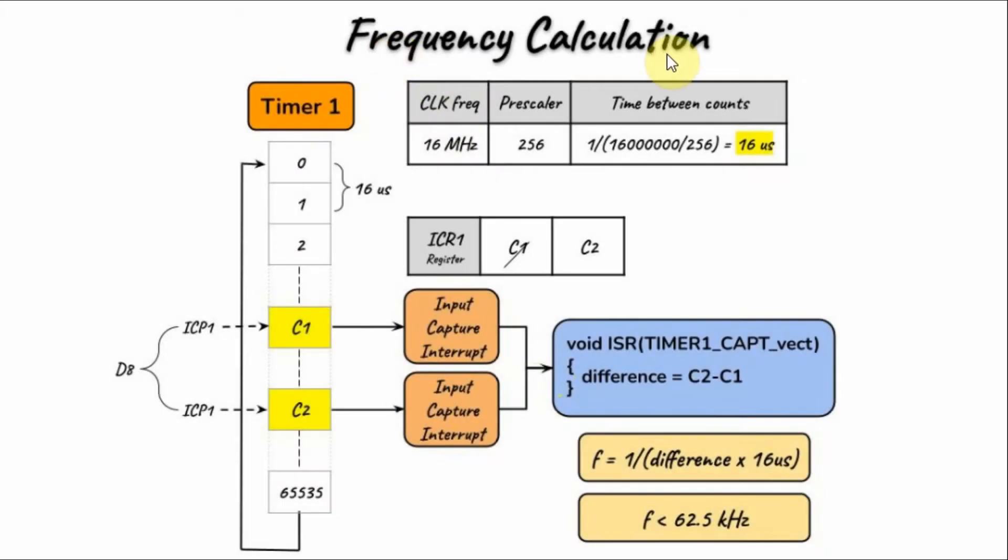To calculate the frequency, we need to program Timer 1 so that input capture interrupts and overflow interrupts are generated. For a clock frequency of 16 MHz, we choose a prescaler value of 256, and the time between counts is 16 microseconds.